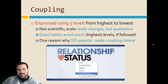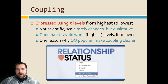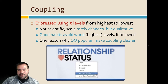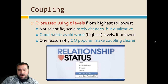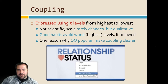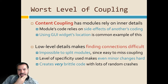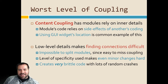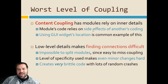We might settle for a tighter level of coupling because we can't quite reach the next level without completely reorganizing our code or sacrificing cohesion or testability. Let's start with content coupling. Honestly, I had to read this a few times to understand it because I can't comprehend why anyone would design this way. This is obviously the worst level of coupling — it's where modules depend on the inner details of other modules.